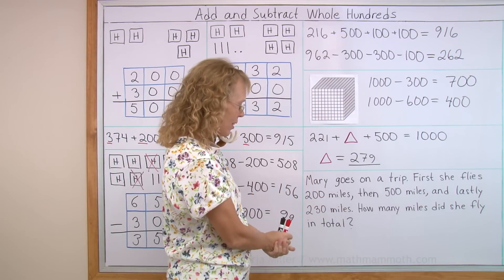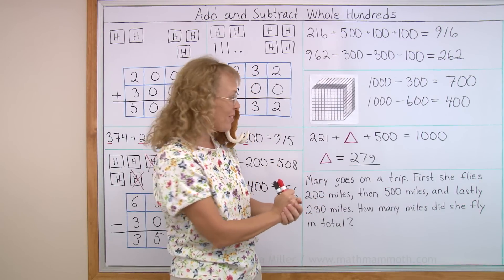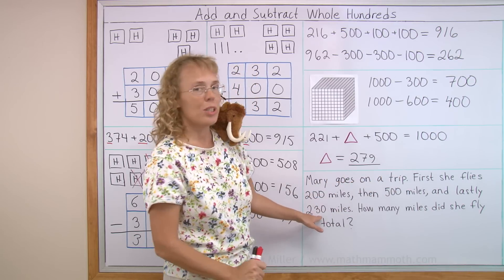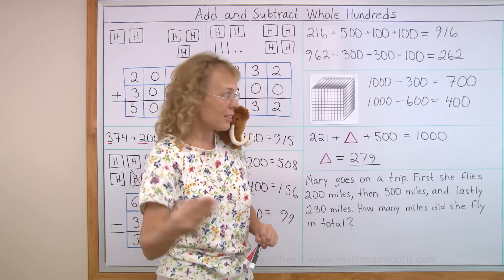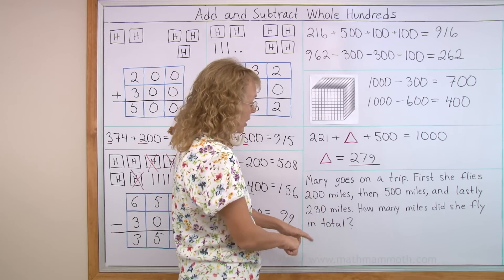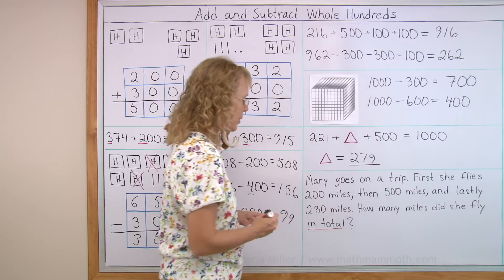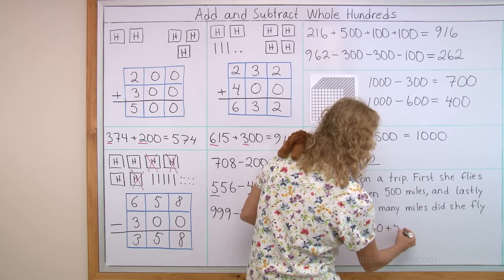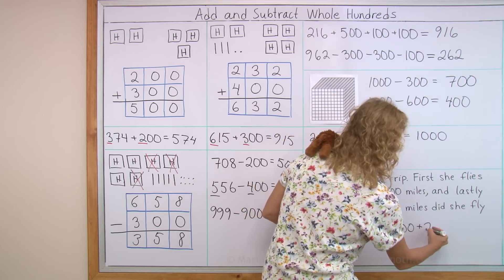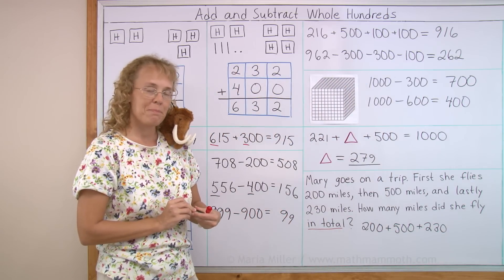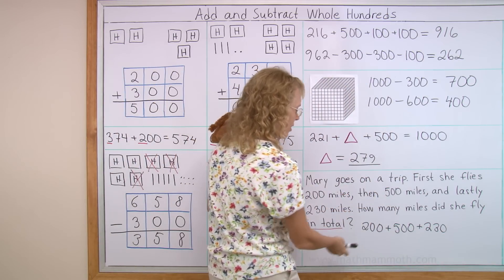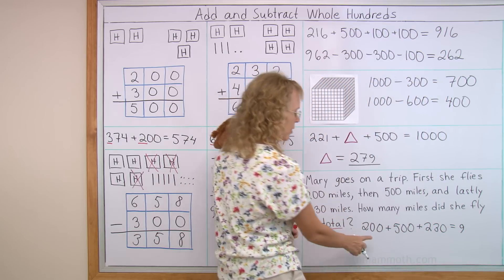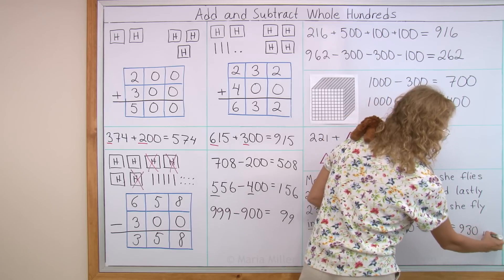Mary goes on a trip. Hope it is vacation somewhere. First, she flies 200 miles. Then she flies 500 miles. Lastly, she flies 230 miles. Three different airplanes. How many miles did she fly in total? In total would mean that we need to add. Let's write the addition here. 200 plus 500 plus 230. Can you solve it? Pretty easy. How many hundreds will we end up having? There's two and five and two hundreds. That's 900. How about anything else? Just the 30. 930 miles, oh my.